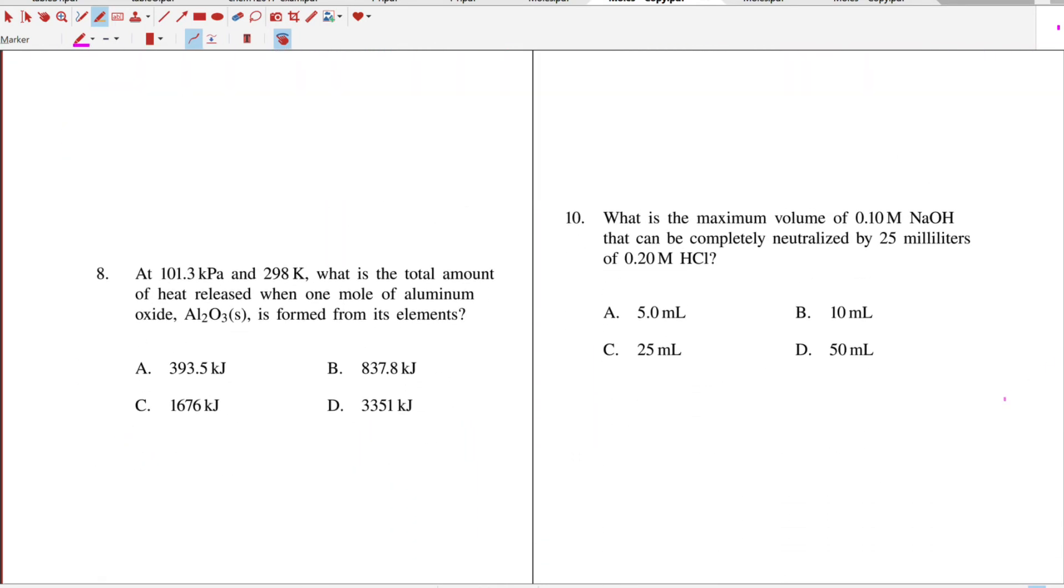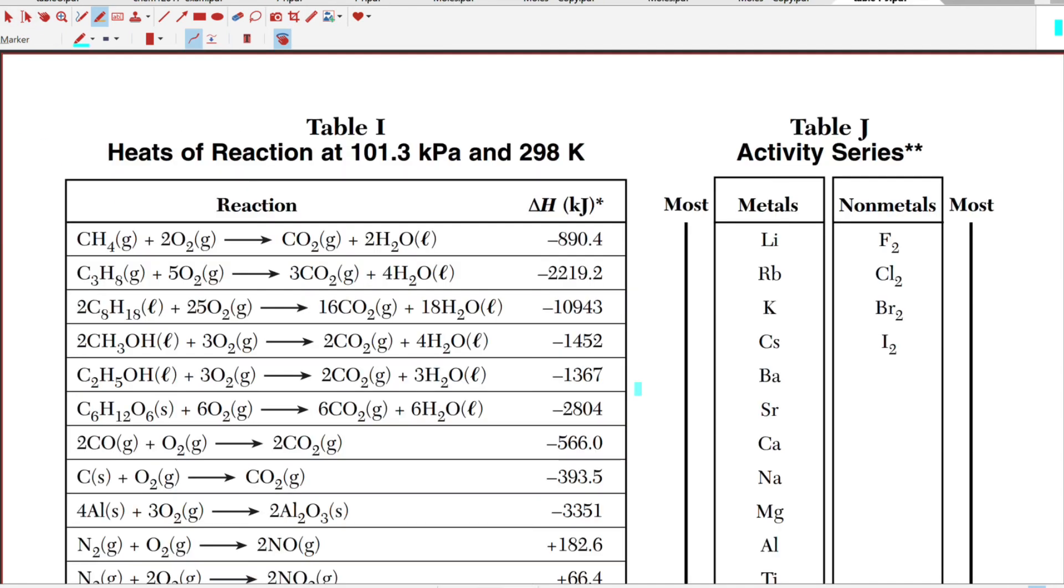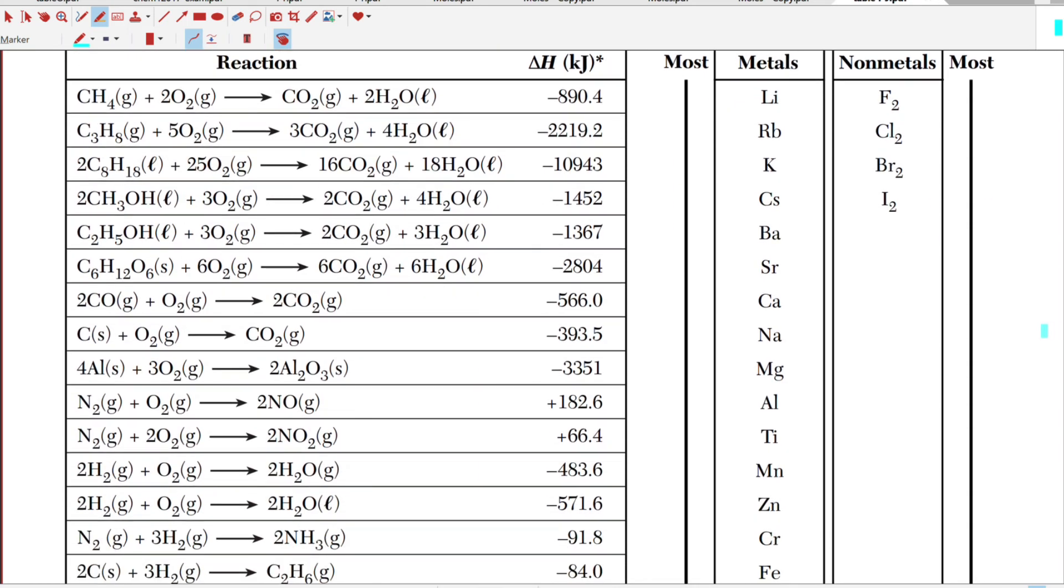Okay, here's another one. When you see at 101.3 kPa and 298 K, that's a hint to go to Table I. And they want to know heat released when one mole of aluminum oxide is formed from its elements. So if we go to Table I, it says at 101.3 kPa and 298 K, and we're looking for aluminum oxide formed from its elements. And I see the number here for the heat of the reaction, and that's for two moles, two moles.